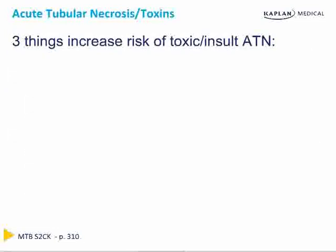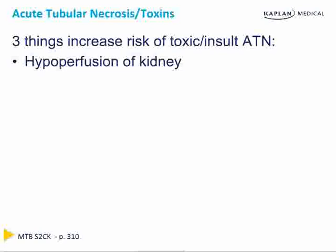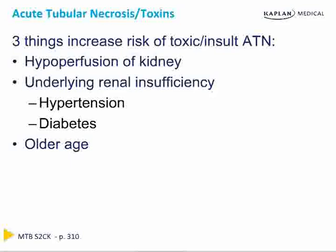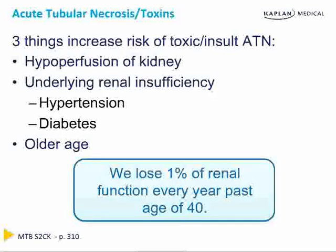Three major risk factors increase the likelihood of toxic ATN: first, hypoperfusion — decreased perfusion combined with a toxic insult worsens AKI; second, underlying renal insufficiency from hypertension or diabetes, meaning less kidney reserve; and third, older age — people lose about 1% of renal function per year after age 40, making older patients much more sensitive to toxic insults leading to ATN.